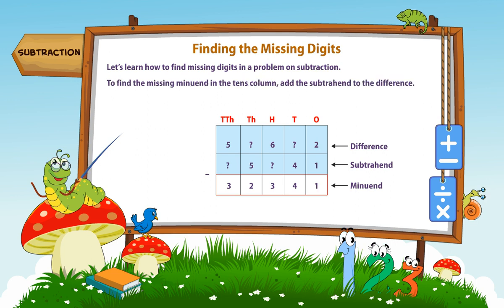To find the missing minuend in the tens column, add the subtrahend to the difference. 4 plus 4 is equal to 8.